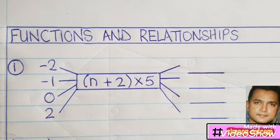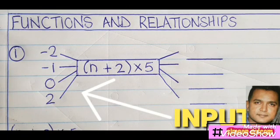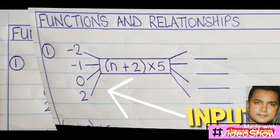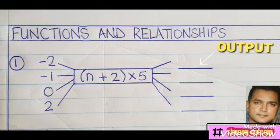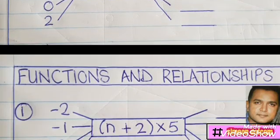Okay guys, this is part one of functions and relationships. You will find your teachers referring to this as the spider diagram because it looks more or less like a spider with legs on the sides. The area on the left is known as the input and the area on the right is your output.